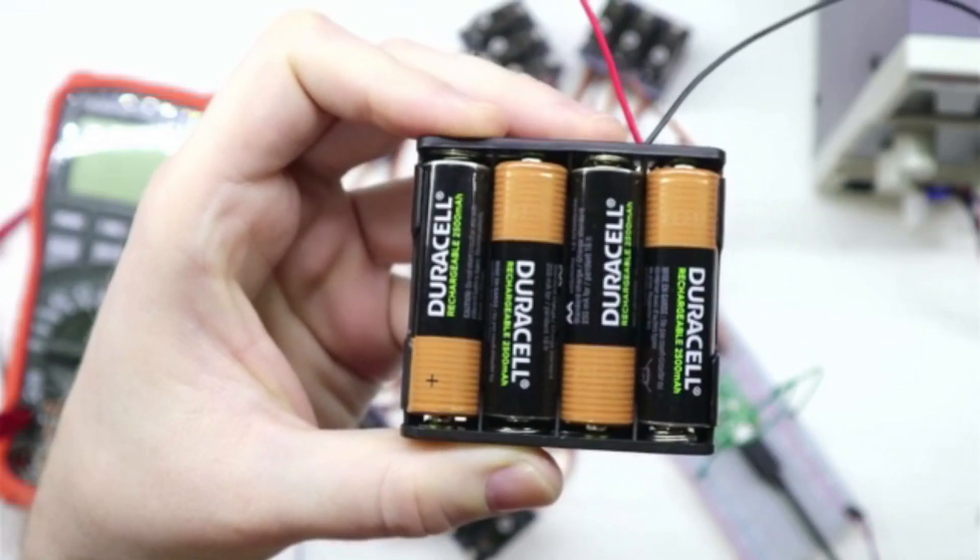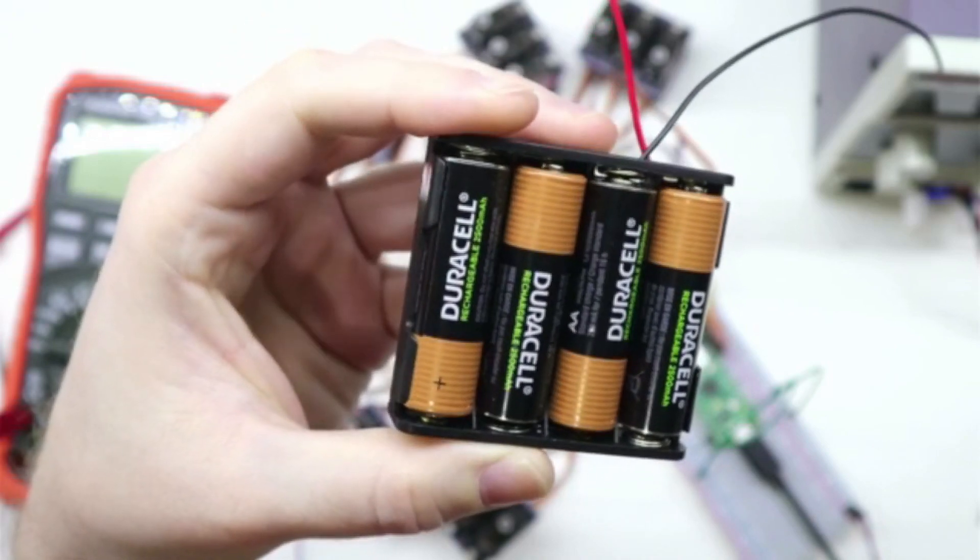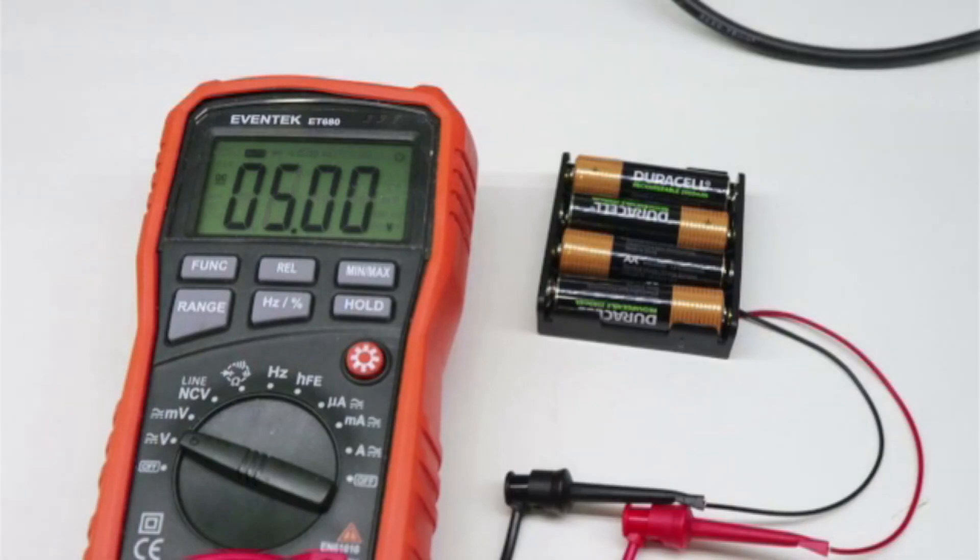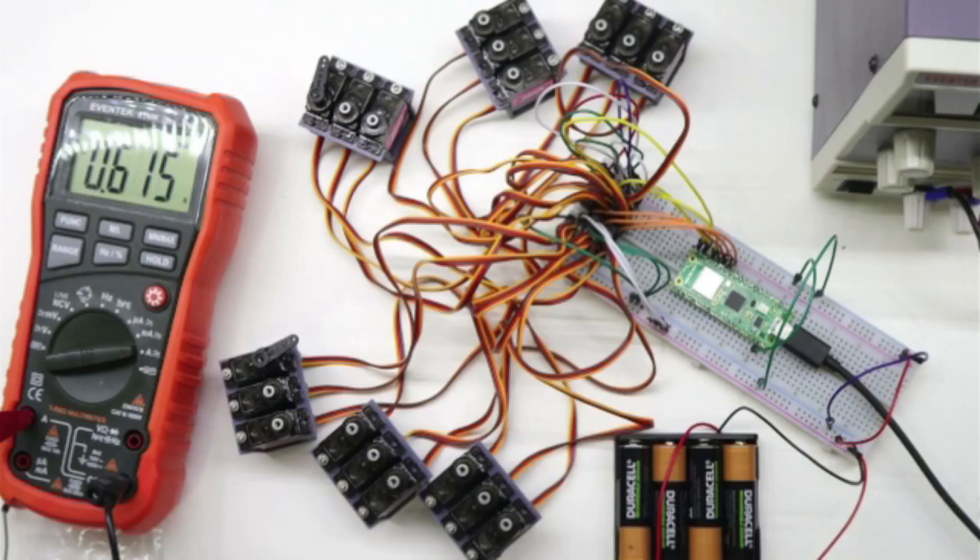Now I want to try swapping out the desktop power supply for four AA batteries. I can confirm that they're running at 5 volts. You can see it maxes out at 6.4 amps. However, the servos seem very underpowered. I don't think this is going to be a viable solution.